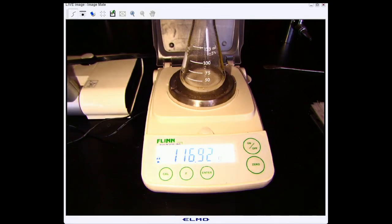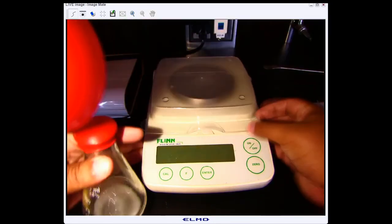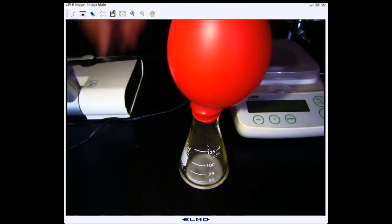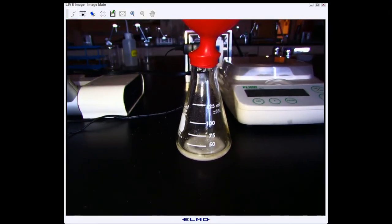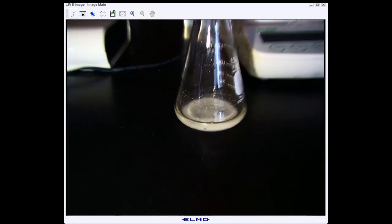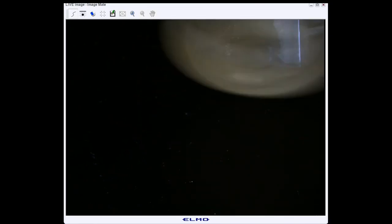All right, so now that the reaction is done, we're going to remove it from the balance and observe what's left in the container. So we got some gas to form, and we can see a little bit of the reaction is still happening. If we give that a swirl, we can see that we're left with a little bit of solid in the end.